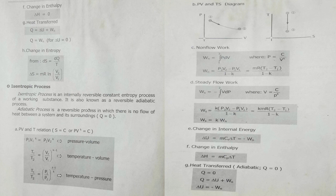In the PV and TS diagrams for the isentropic process, pressure is decreasing and volume is also decreasing, while temperature is also decreasing. Non-flow work is from integration of P dV from 1 to 2, where P equals C over V raised to K. Non-flow work equals P2V2 minus P1V1 all over 1 minus K, or equal to MR times change in T all over 1 minus K.